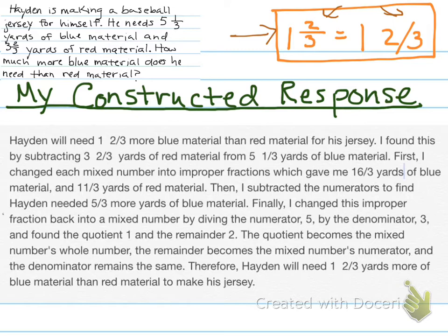Then I subtracted the numerators to find Hayden needed 5/3 more yards of blue material. Finally, I changed this improper fraction back into a mixed number by dividing the numerator, 5, by the denominator, 3, and found the quotient, 1, and the remainder, 2. The quotient becomes the mixed number's whole number, the remainder becomes the mixed number's numerator, and the denominator remains the same. Therefore, Hayden will need 1 and ⅔ yards more blue material than red material to make his jersey.